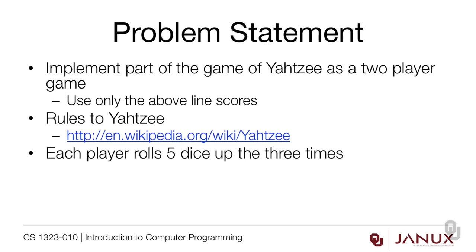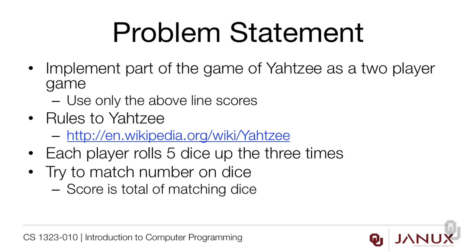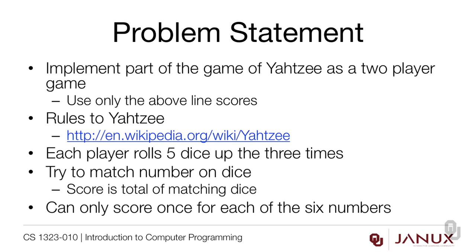Here's a summary for those of you who've played the game in the past but maybe not recently. Each player rolls five dice up to three times. They try to match the number on the dice, and the score is the total of the matching dice only — the other dice don't get counted. You can only score once for each of the six numbers: ones once, twos once, threes once, and so on.